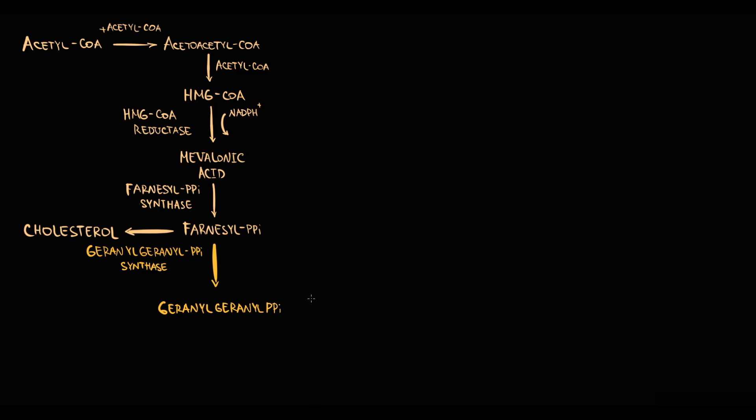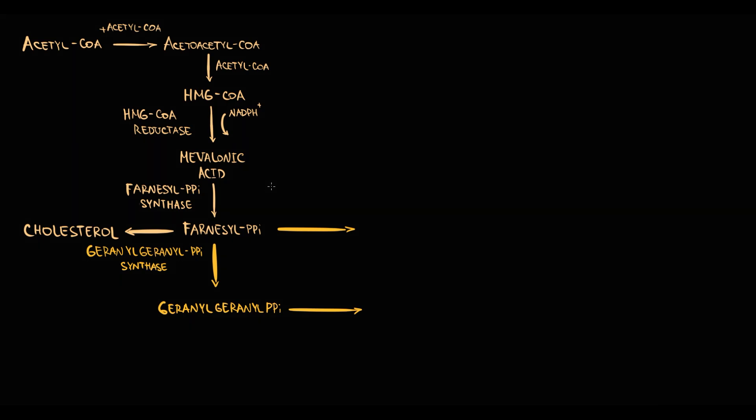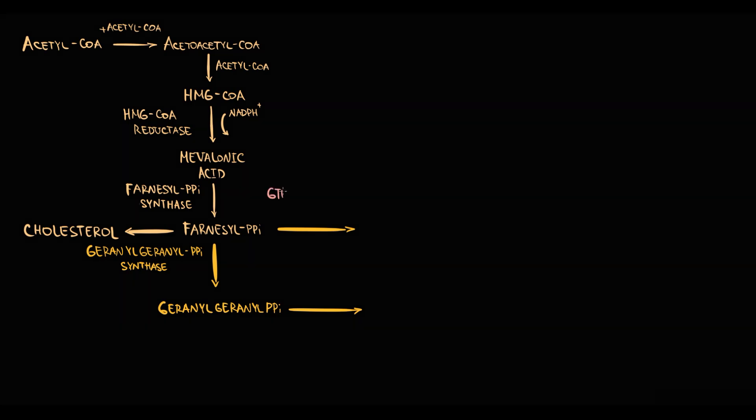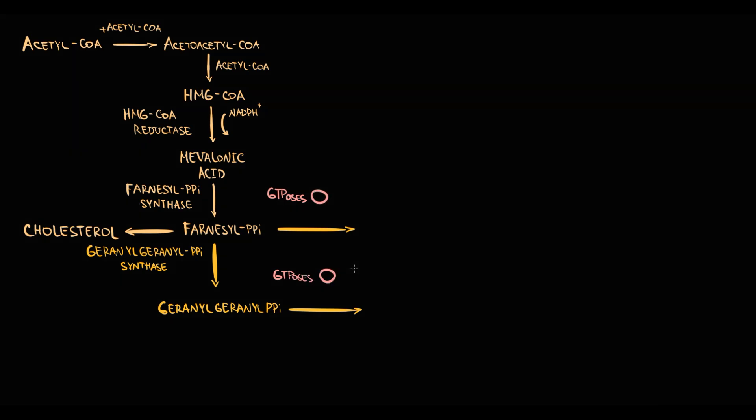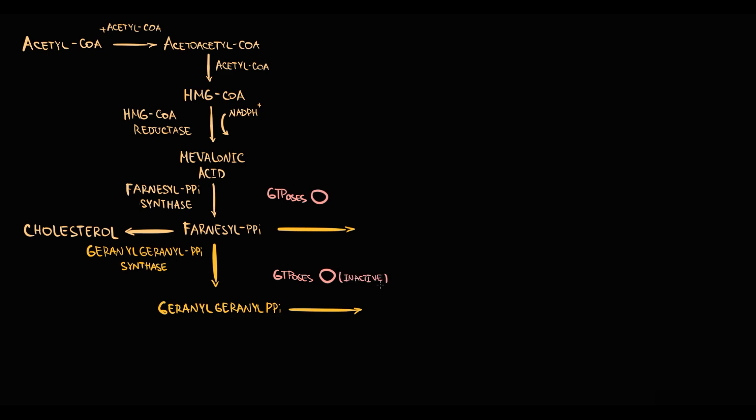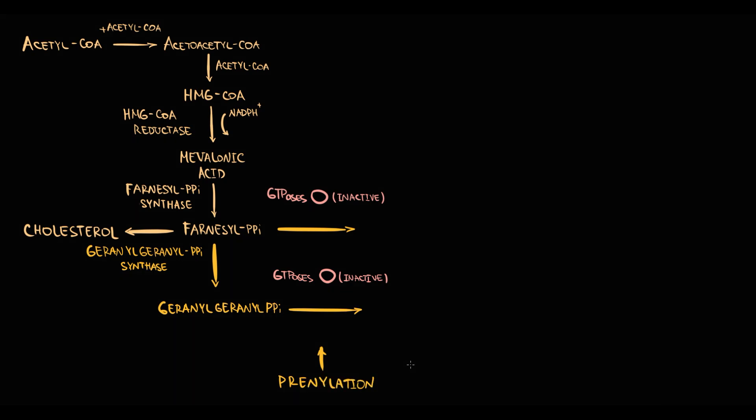Both farnesyl pyrophosphate and geranyl-geranyl pyrophosphate are used for protein modification. In the cytosol, osteoclasts have a lot of GTPases, which are intracellular proteins used as intracellular mediators. But without modifications, they remain inactive. Modification of GTPases is called prenylation, and prenylation occurs by two pathways.